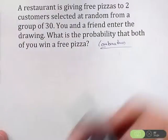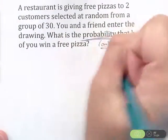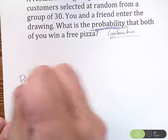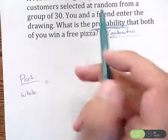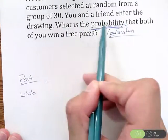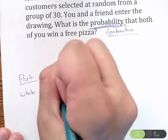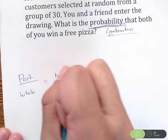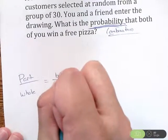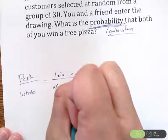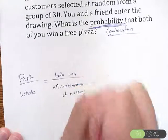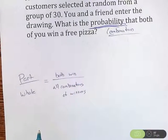We've got to think about this. Since this does say a keyword they want a probability, we're thinking about the part over the whole. So what's the specific scenario they're wanting? They're wanting to know, you and a friend enter the drawing, what's the probability that you both win? So they want to know both win. So you and your friend win. And the whole would be all combinations of winners.